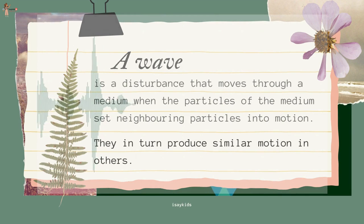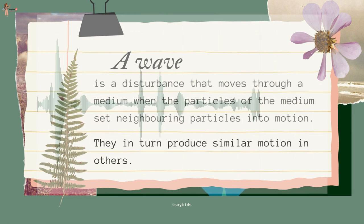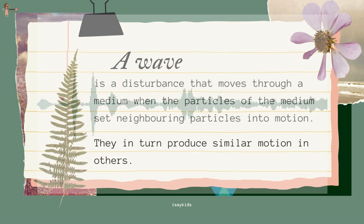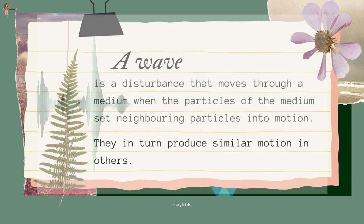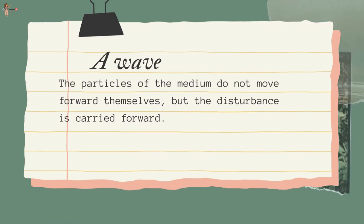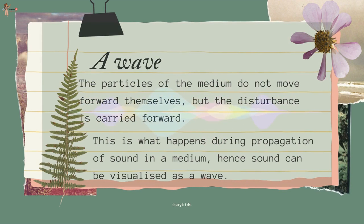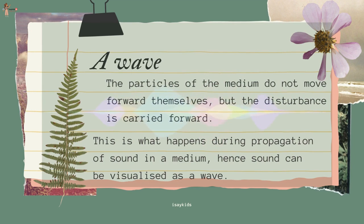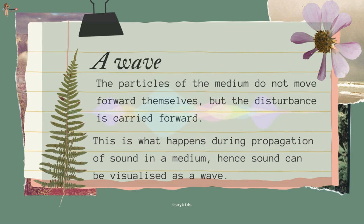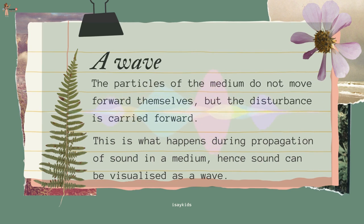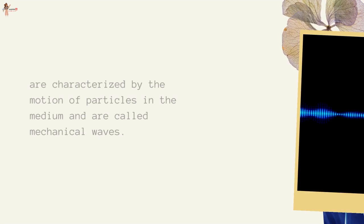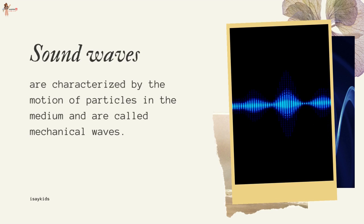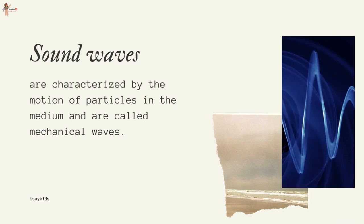A wave is a disturbance that moves through a medium. When the particles of the medium set neighboring particles into motion, they in turn produce similar motion in others. The particles of the medium do not move forward themselves, but the disturbance is carried forward. This is what happens during propagation of sound in a medium, and hence sound can be visualized as a wave. Sound waves are characterized by the motion of particles in the medium and are called mechanical waves.